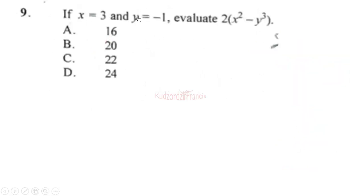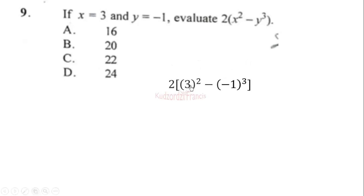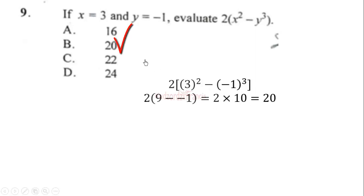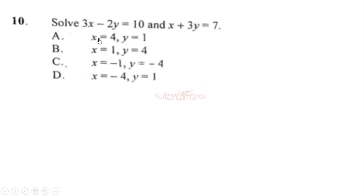Question 9: if x = 3 and y = −1, evaluate 2(x² − y^(−y)) · y³. Substituting x = 3 and y = −1: 3² = 9, and minus negative 1 gives 9 + 1 = 10. Then 2 times 10 equals 20. The correct answer is 20.